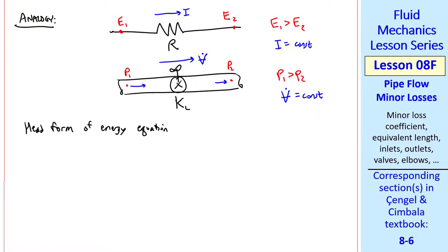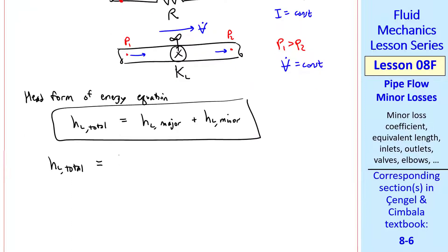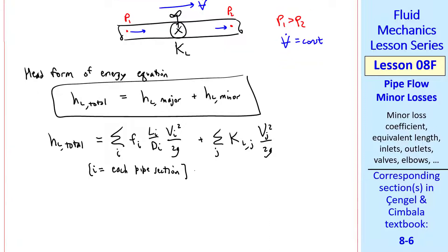Regardless of which form of minor loss you use, the head form of the energy equation has the total irreversible head loss as the sum of major and minor losses. If there are several sections of pipe in series, we sum over all those sections, and we sum all the minor loss coefficients times vj squared over 2g. Index i represents each pipe section, and j represents each minor loss component.